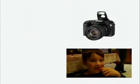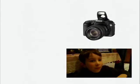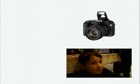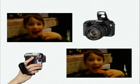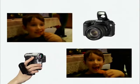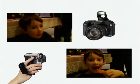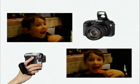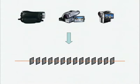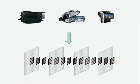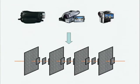Digital still cameras can capture beautiful high-resolution images. Digital video cameras, on the other hand, are still producing low-resolution video, even with the move to HD. Hybrid cameras that support the simultaneous capture of low-resolution video and high-resolution stills are now becoming available, but they are still limited in their capture capabilities and produce low-quality images.